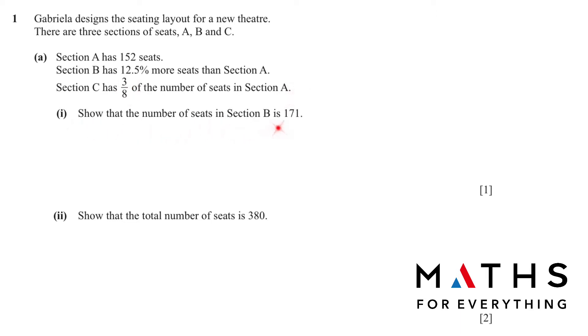Show that the number of seats in section B is 171. B has 12.5% more than 152, so we find 12.5% of 152. Percentage means we divide by 100, so 12.5 over 100 multiplied by 152 is 19. Now add 19 to 152 and you will get 171.